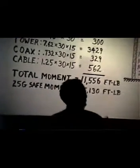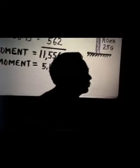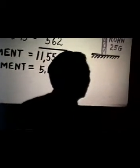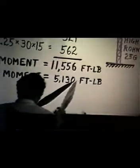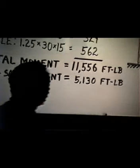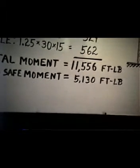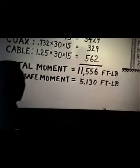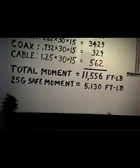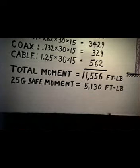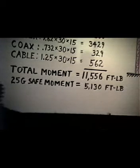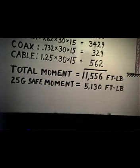When you look in the Rohn catalog, they show that the maximum safe moment of restraint on that tower — that is, its ability to withstand moment — is 5,130 foot-pounds. In this case we are more than twice overloaded on that tower. So when our friend calculated this out, he said he can't put Rohn 25G up self-supporting with that beam on top at 30-foot height. It'll break down in a high wind.